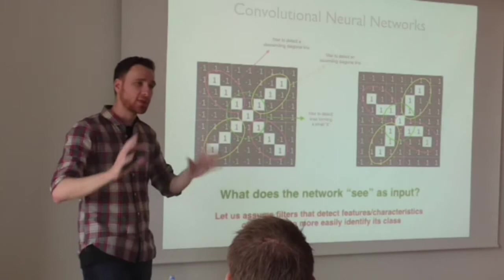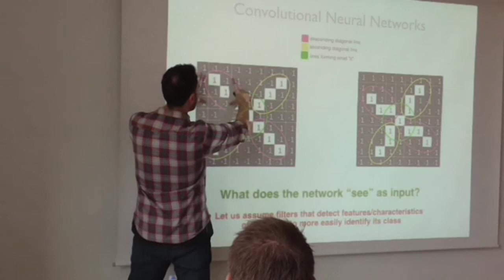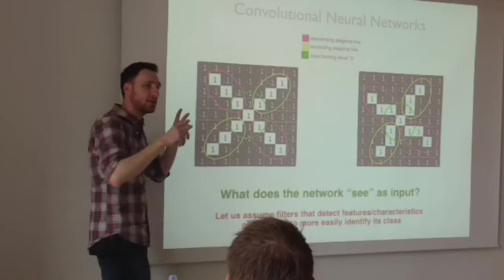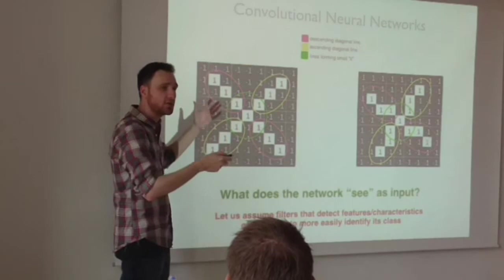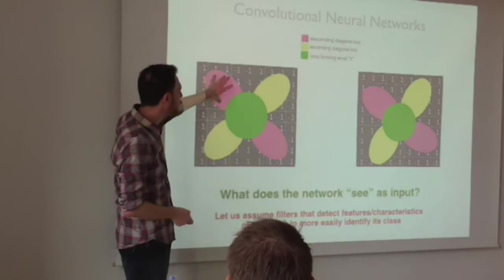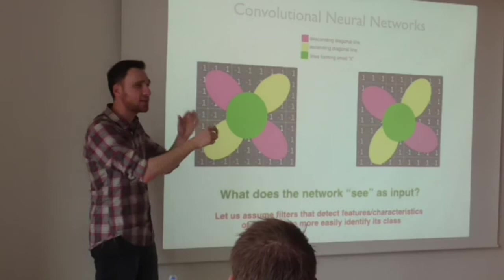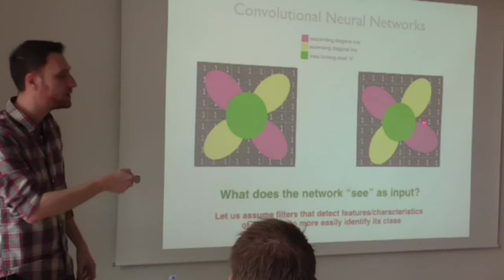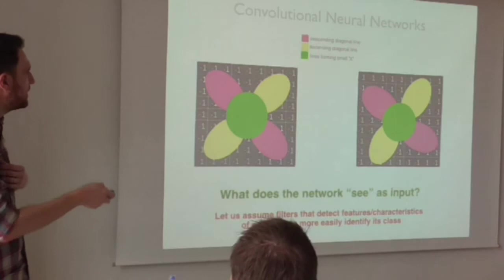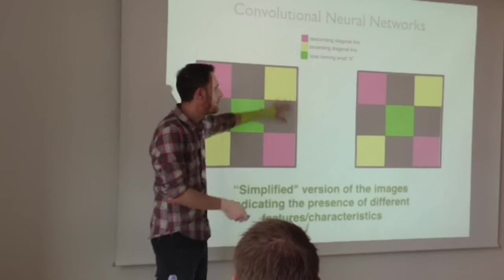If you apply those filters to this image, you get an indication of where there's a descending diagonal line, ascending diagonal line, and so on — high activation numbers in regions where these features occur. The purple filter detecting descending diagonal lines would be highly activated in certain regions; the ascending diagonal filter would be highly activated in others; and the X-feature filter would be highly activated in the center. These two images become much easier to compare. You would look at these figures and see that they're structurally similar — that's what CNNs are doing.